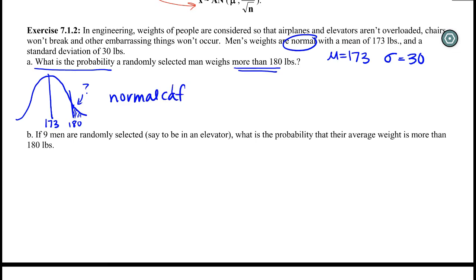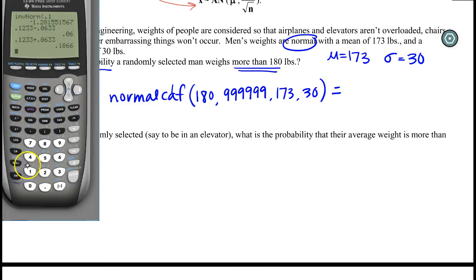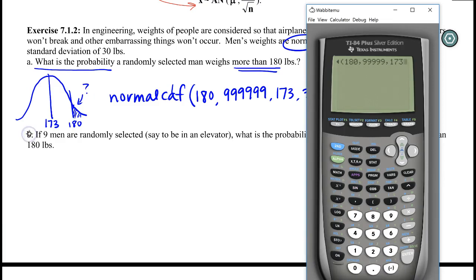For those of us who use the calculator shortcuts, we're doing normal CDF, 180 to our crap ton of 9s, something way, way big with our mean and our standard deviation. And those of you guys in my third class who love to do this by hand, you are finding a z-score and looking it up in the table. So 180, crap ton of 9s, 173, and 30.